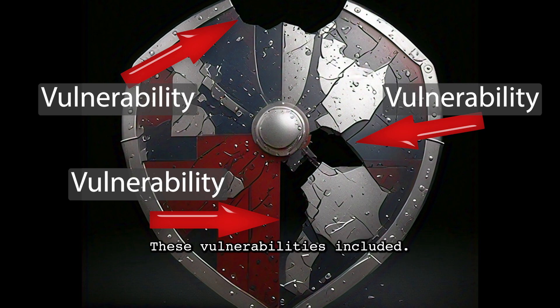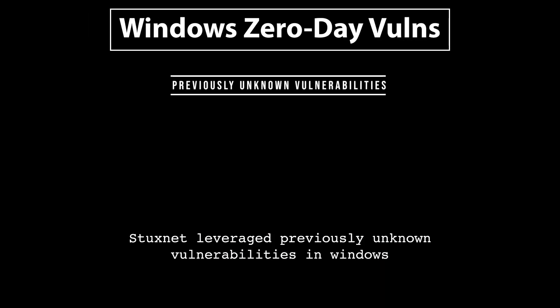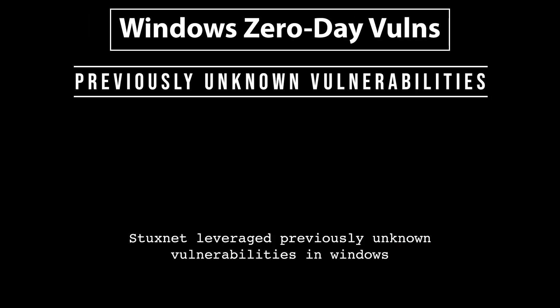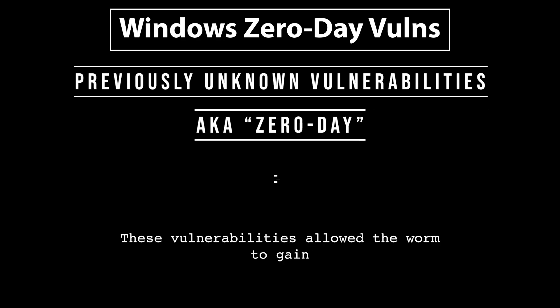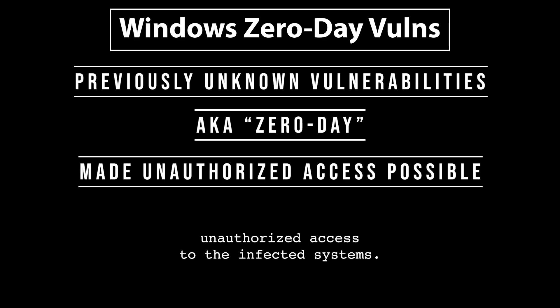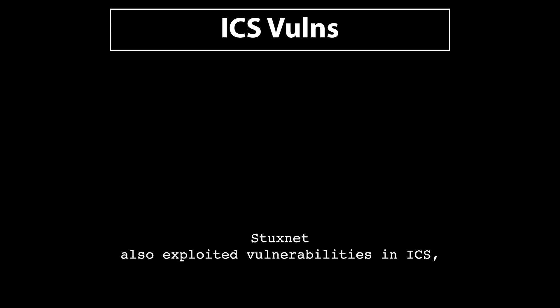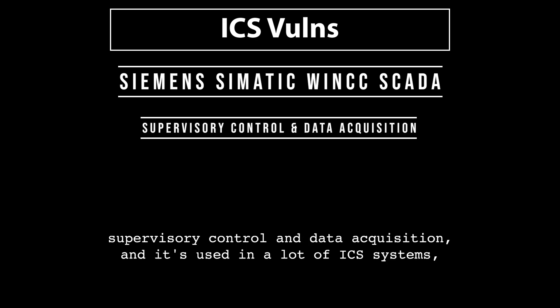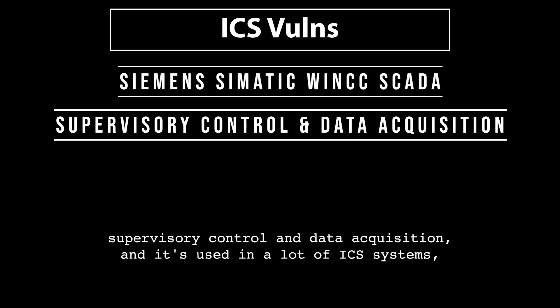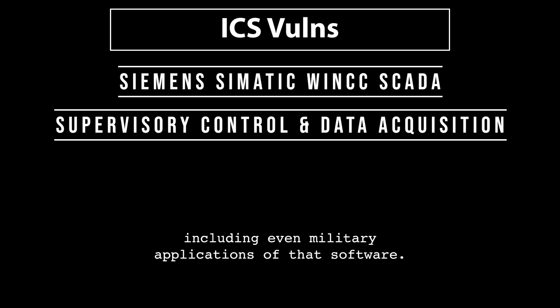These vulnerabilities included Windows zero-day vulnerabilities — previously unknown vulnerabilities in Windows operating systems that allowed the worm to gain unauthorized access to infected systems. Stuxnet also exploited vulnerabilities in ICS, specifically the Siemens Simatic WinCC SCADA software. SCADA stands for Supervisory Control and Data Acquisition, and it's used in many ICS systems, including military applications.